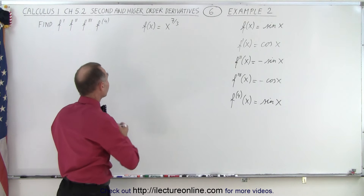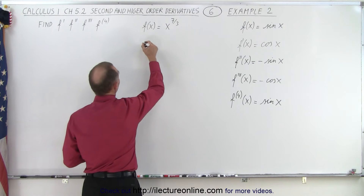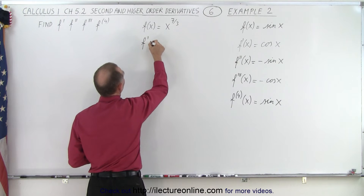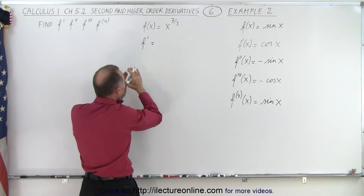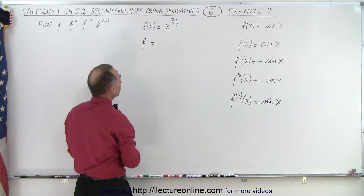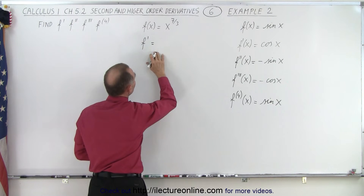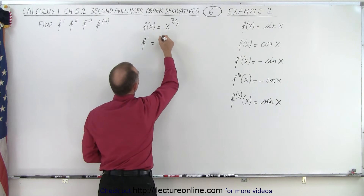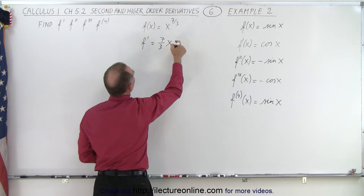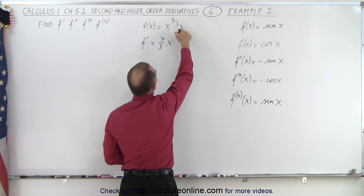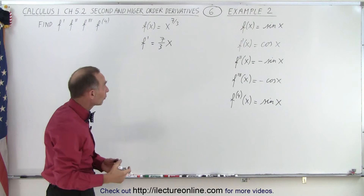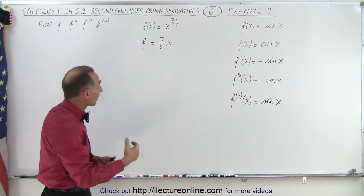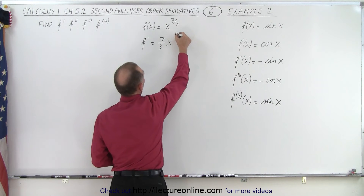Let's try this one here. So the first derivative f prime is equal to — I can simply write f prime — and it would be the exponent seven-thirds times x to the exponent minus one. Of course, one would be three-thirds, so seven-thirds minus three-thirds is four-thirds, giving x to the four-thirds.